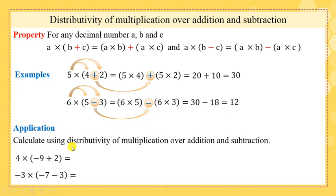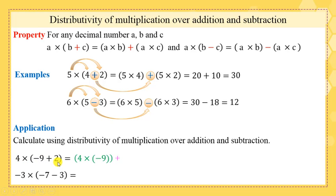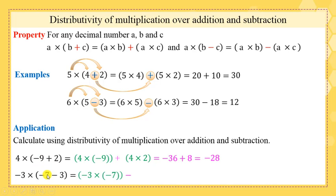Application: calculate using distributivity of multiplication over addition and subtraction. Please pause this video and try to solve the application. Okay, 4 × (negative 9 + 2) = 4 × negative 9 + 4 × 2 = negative 36 + 8 = negative 28.